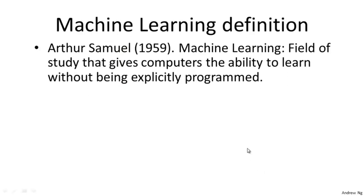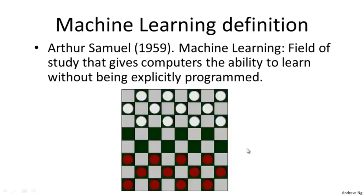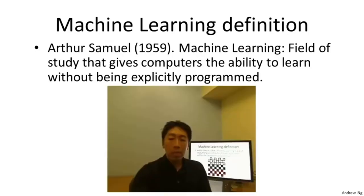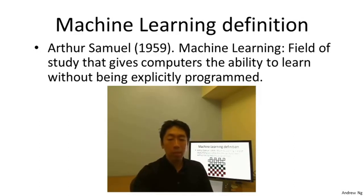Samuel's claim to fame was that back in the 1950s he wrote a checkers playing program. The amazing thing about this program was that Arthur Samuel himself wasn't a very good checkers player. But what he did was he had the program play tens of thousands of games against itself, and by watching what sorts of board positions tended to lead to wins and what sort of board positions tended to lead to losses, the checkers playing program learned over time what are good board positions and what are bad board positions, and eventually learned to play checkers better than Arthur Samuel himself was able to.